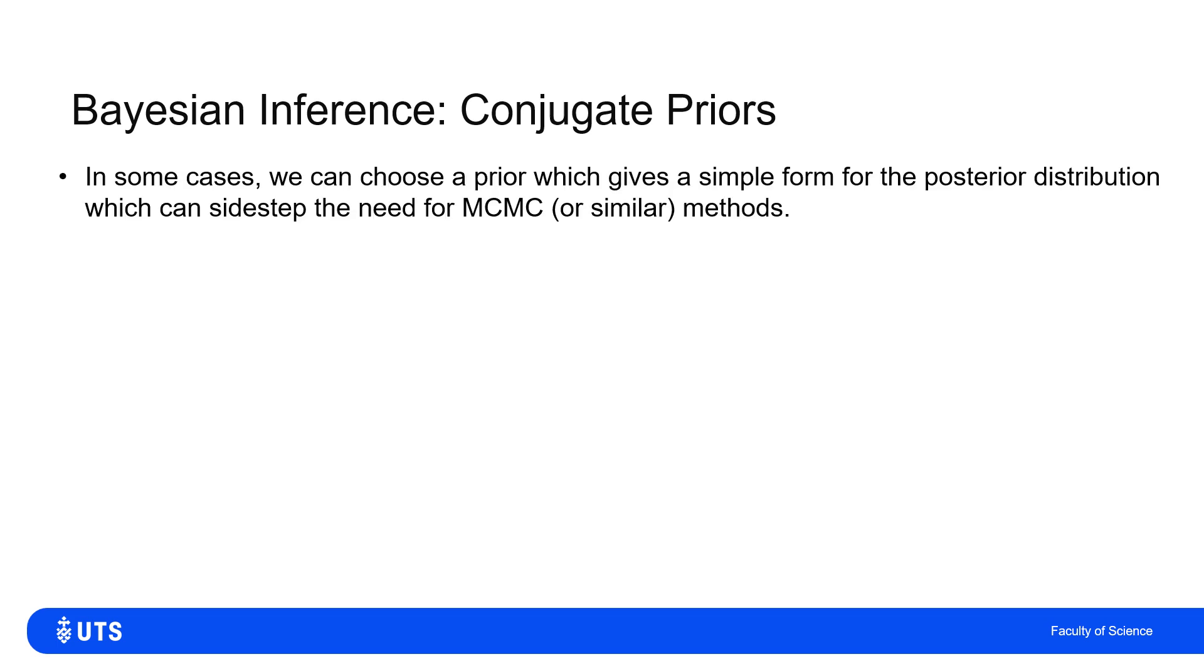We've already seen that in a Bayesian framework, our posterior beliefs—what we think about the parameters values before an experiment—influences what we think after. The posterior was a product of the prior and the likelihood of the evidence.